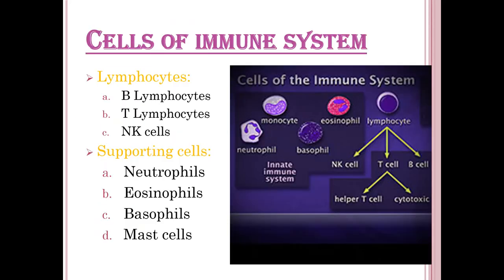The cells of the immune system are categorized under lymphocytes, which include B lymphocytes, T lymphocytes, and NK cells. Supporting cells include neutrophils, eosinophils, basophils, and mast cells.